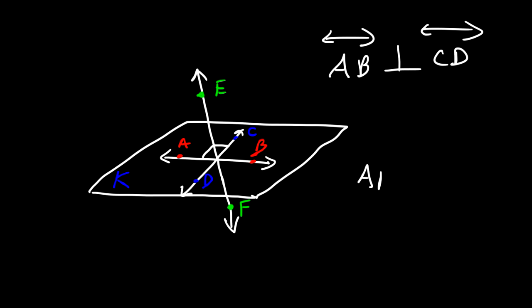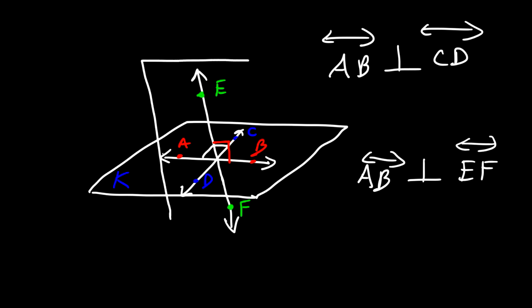We could also say that line AB is perpendicular to EF, where the right angle is formed between them. Now AB and EF do not both exist in plane K; however, we can draw another plane in which they both exist — call it plane S. Any two intersecting lines can form one plane, so EF is in plane S and AB is found in both plane K and plane S.